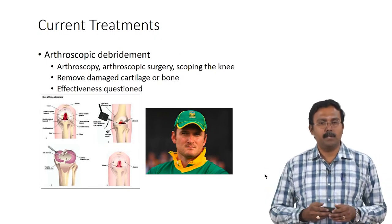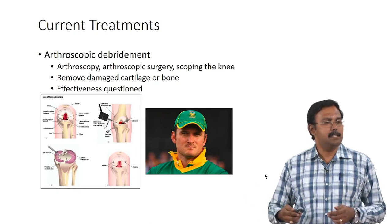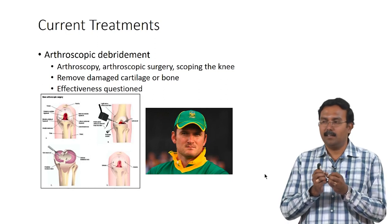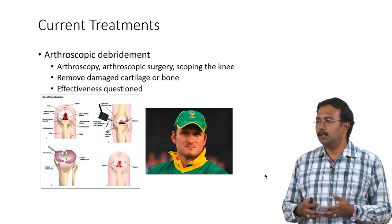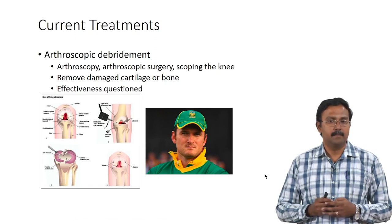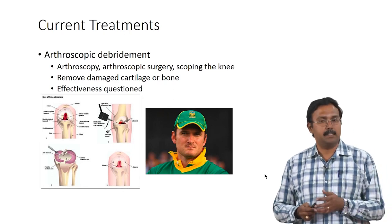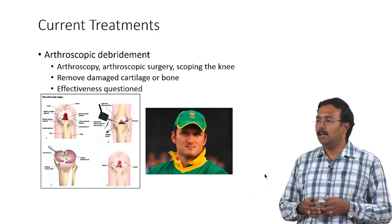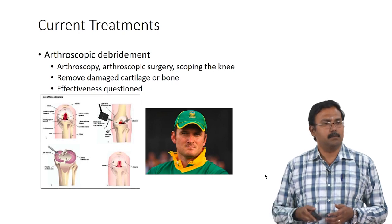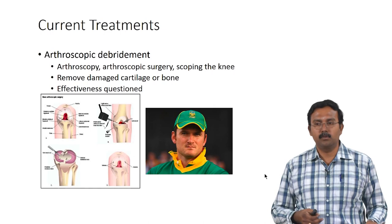One procedure is arthroscopic debridement — also called scoping the knee. It is basically a cleanup procedure: when your cartilage damages, small bits and pieces are lying around causing more pain. Scoping the knee removes the damaged cartilage and cleans up the area so it can heal in a better fashion. The effectiveness of this procedure has been questioned with respect to its healing effect, but it will definitely help in reducing the pain and alleviating the suffering of the patient. Many athletes such as cricketers, soccer players, and basketball players go through scoping the knee quite regularly.